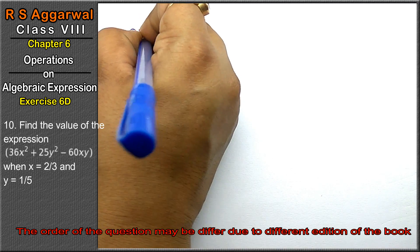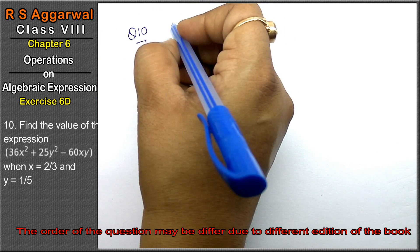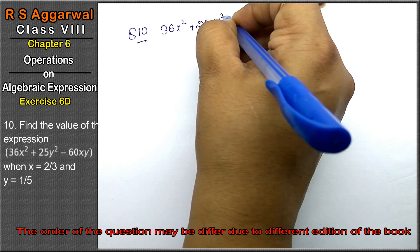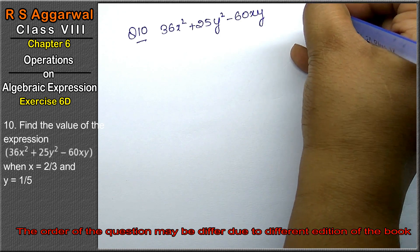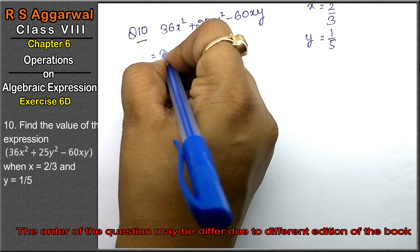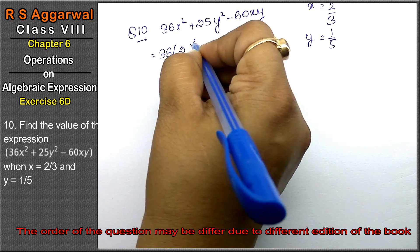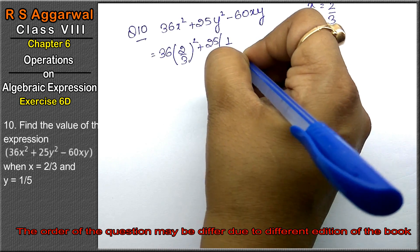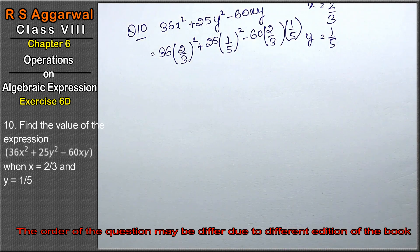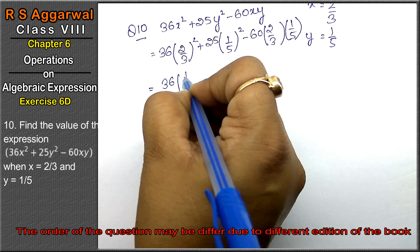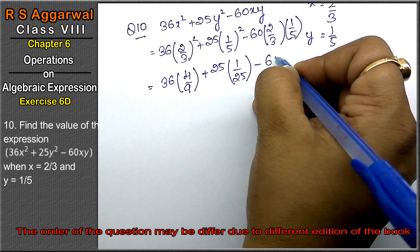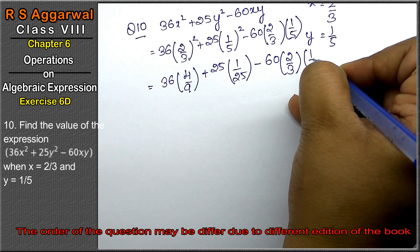Let's do question number 10 of exercise 6D, that is algebraic expression. Question number 10 is: find the value of 36x² + 25y² - 60xy when x = 2/3 and y = 1/5. So here, 36 × (2/3)² + 25 × (1/5)² - 60 × (2/3) × (1/5). That gives 36 × 4/9 + 25 × 1/25 - 60 × 2/3 × 1/5.